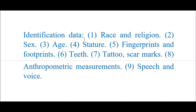Various identification data include: race and religion, sex, age, stature, fingerprinting and footprints, teeth, tooth and scar marks, tattoo and scar marks, various anthropometric measurements, and speech and voice. These are the various identification data.